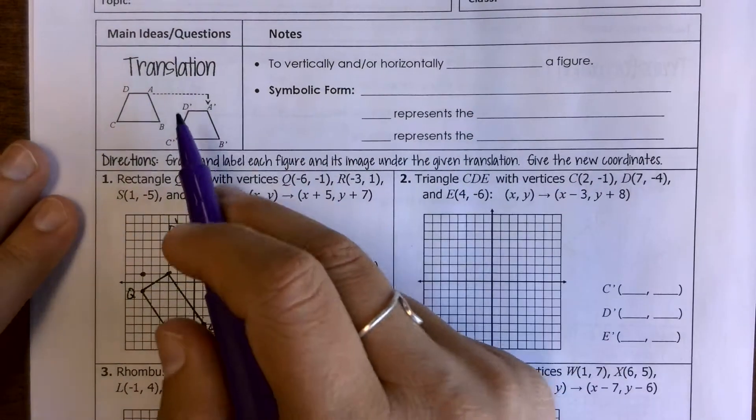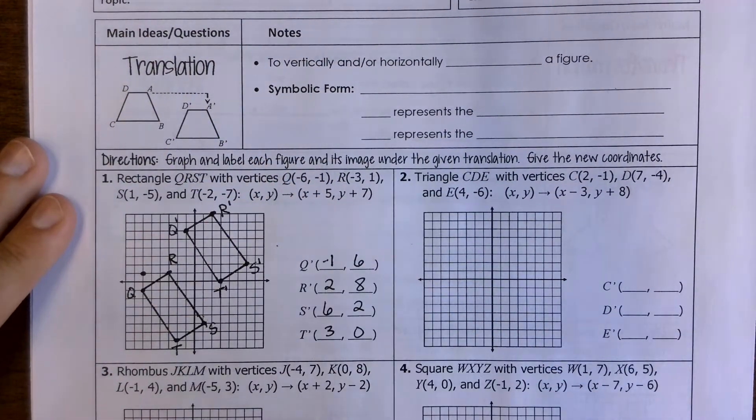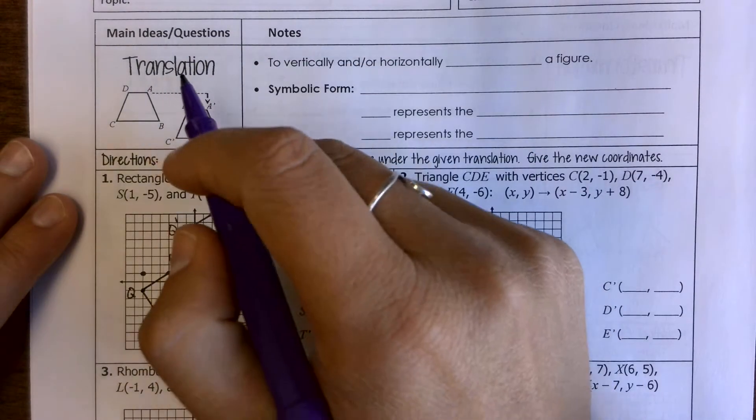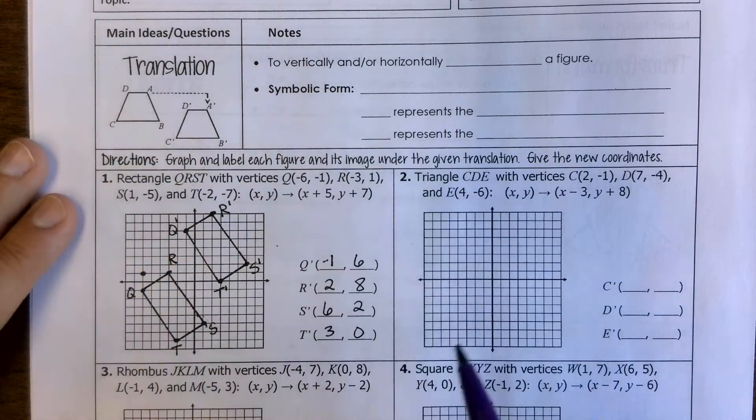Our second transformation is a translation, and they do sound very similar. So transformations are all four of them. Translation is when we're trying to slide a figure or just shift it from one space to another.